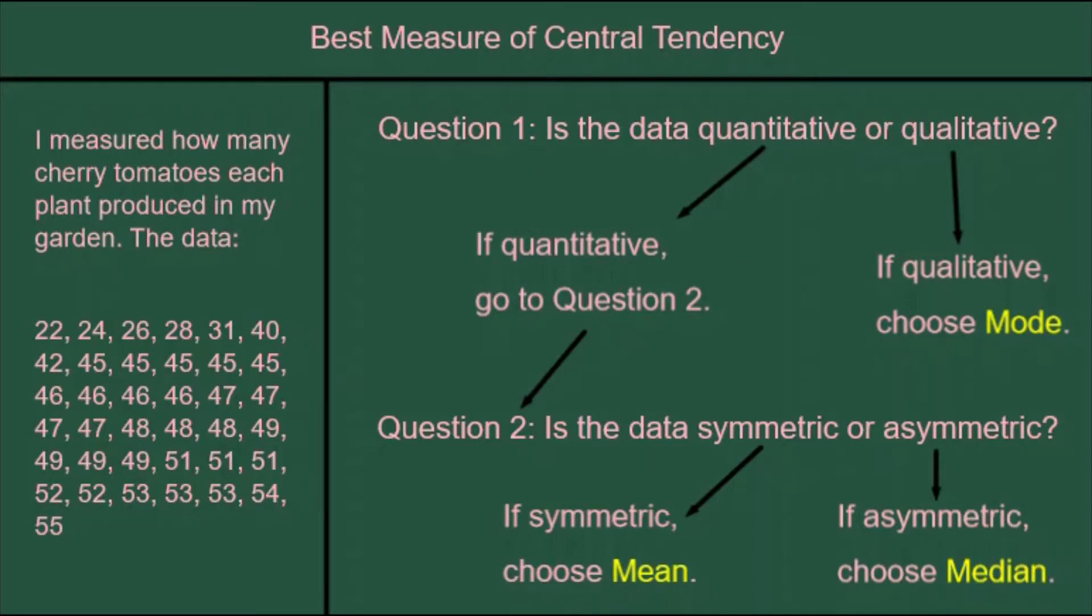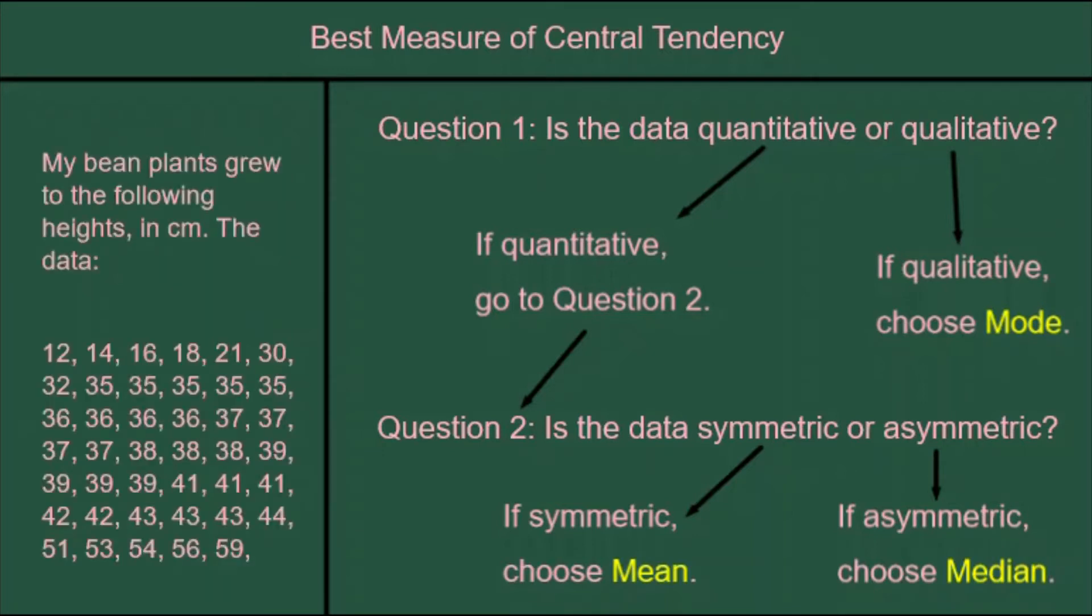Now let's look at another example. This is about bean plants this time, and it's the heights of the plants in centimeters. We look at the data and ask ourselves question one: is the data quantitative or qualitative? It's quantitative again, it's numbers. So we move on to question two, and that means we're not going to choose mode.